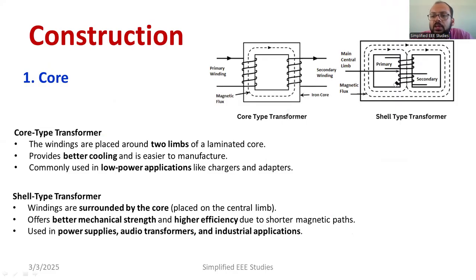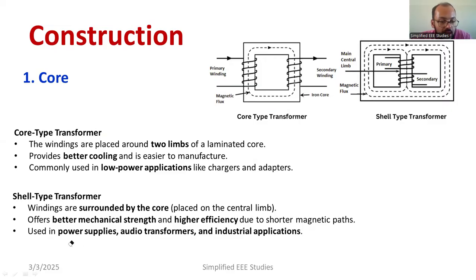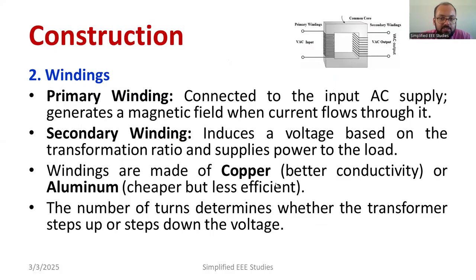We will be making a separate video on the difference between core type and shell type transformers. The shell type transformer has better mechanical strength, and the windings are surrounded by the core — whereas in the core type, the core is surrounded by the winding. The shell type is used for power supplies, audio transformers, and industrial applications.